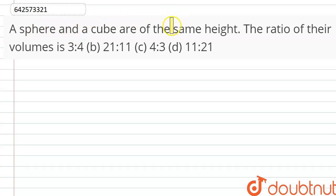Hello friends, the question states that a sphere and a cube are of same height. So the ratio of their volumes would be: option a is 3 is to 4, option b is 21 is to 11, option c is 4 is to 3, and option d is 11 to 21.